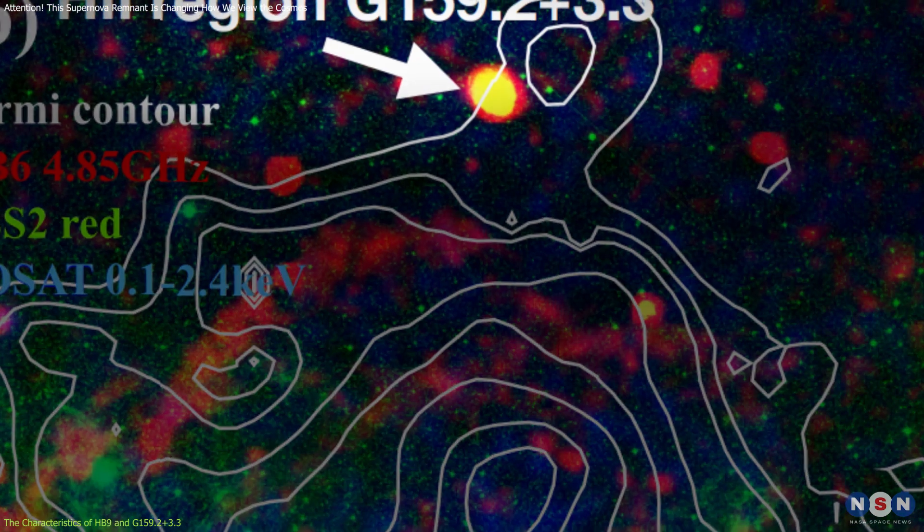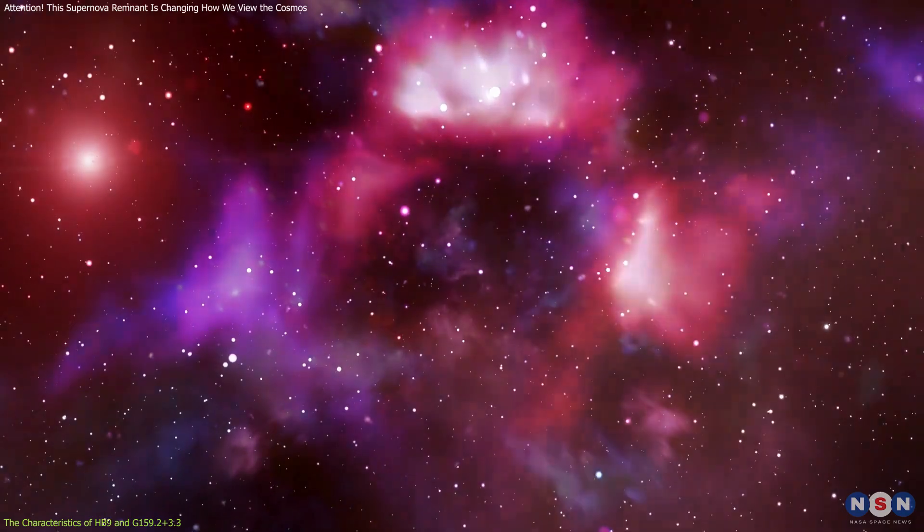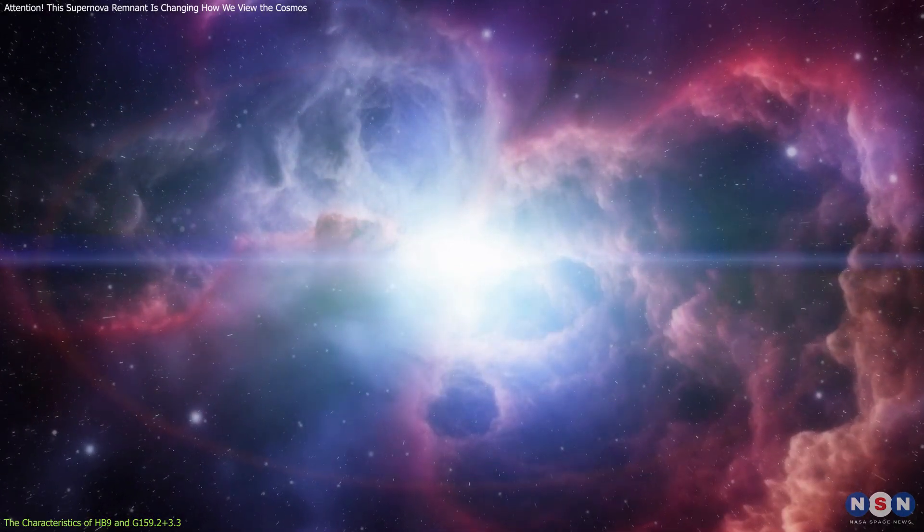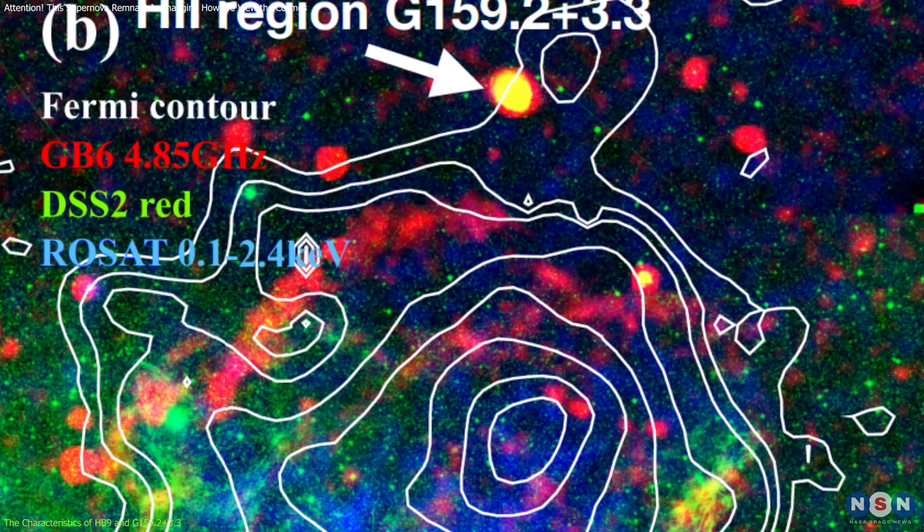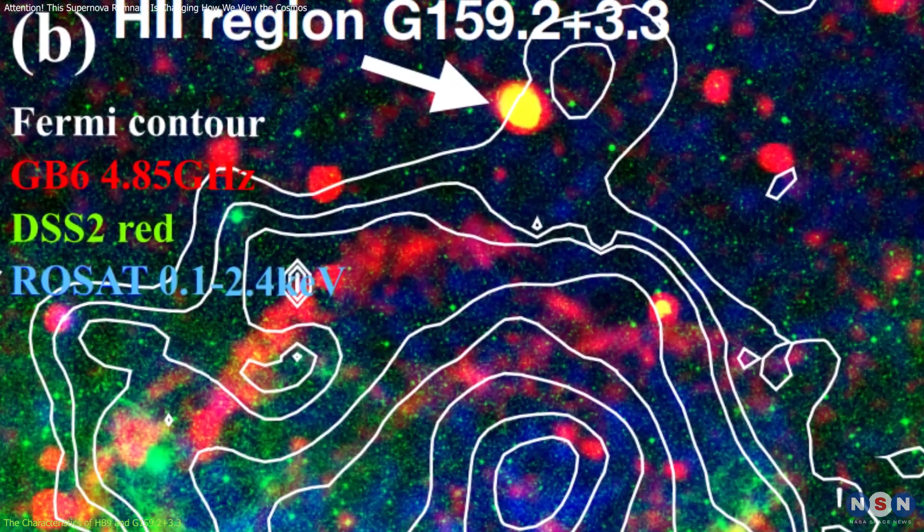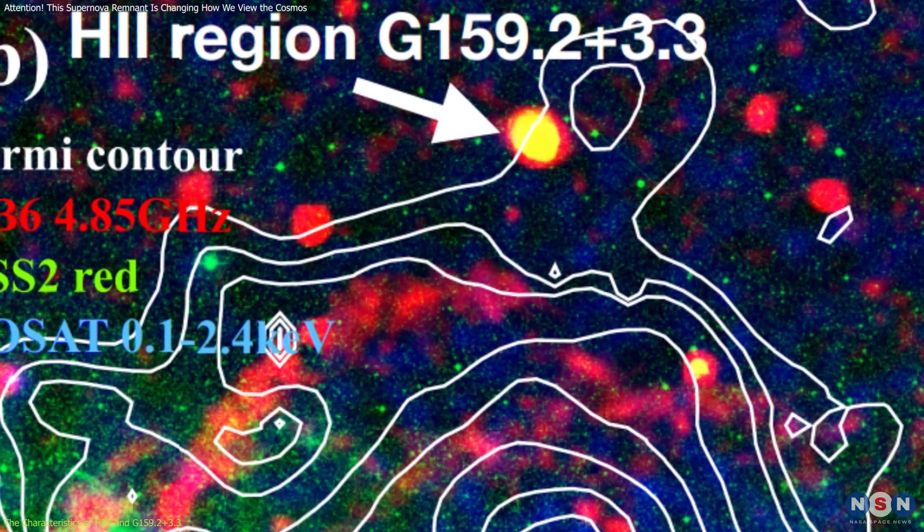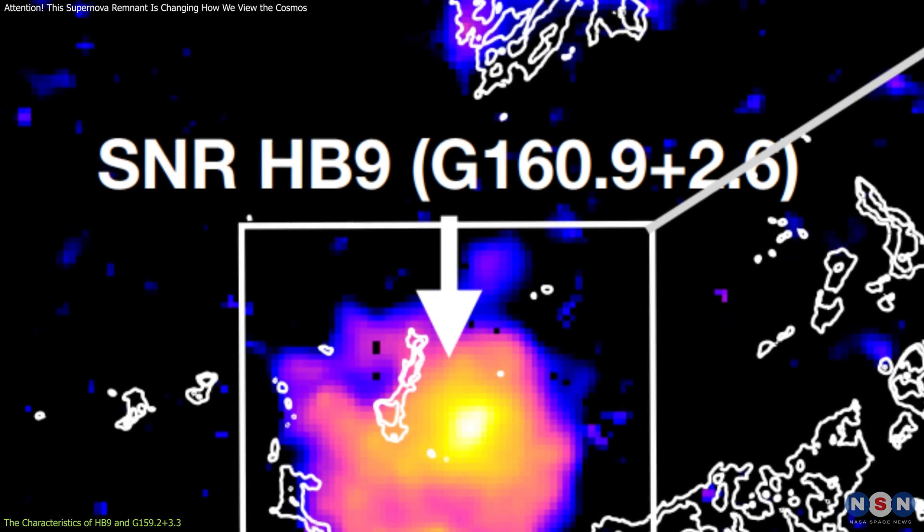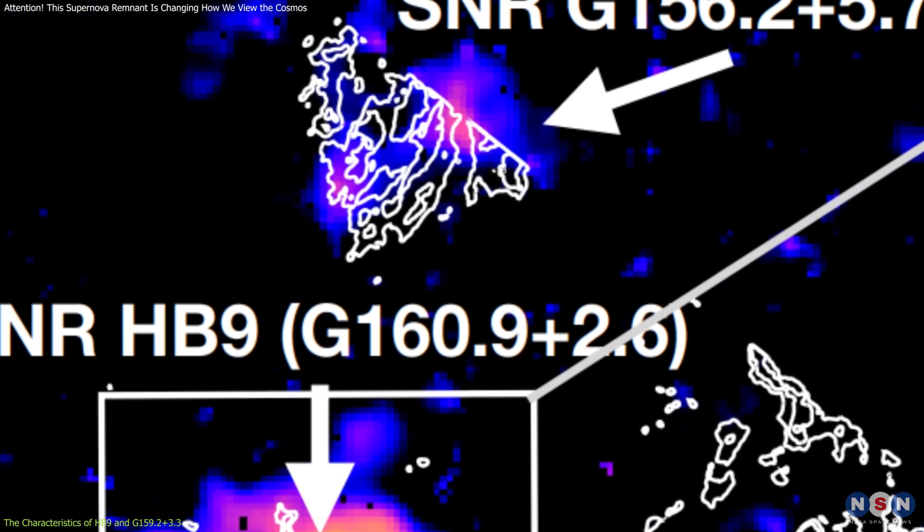Its name starts with G159. H2 regions are areas of ionized gas, typically created by young, massive stars that emit intense ultraviolet light. This region appears much brighter and more compact than Hb9, and is located about 2 degrees north from the southern edge of the remnant's shell. These two objects seem to be close enough to each other to suggest a possible physical connection.